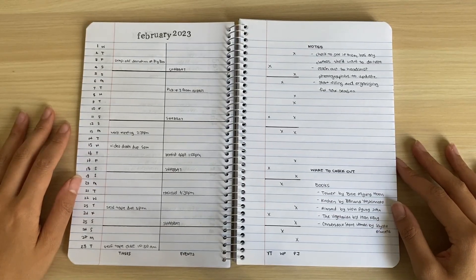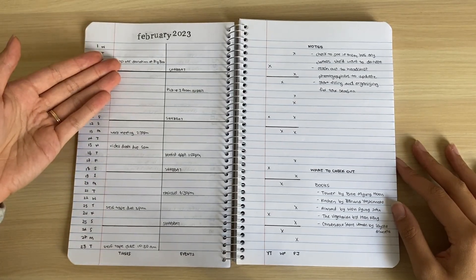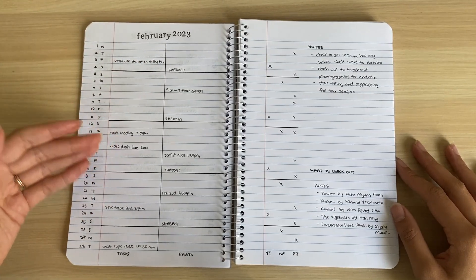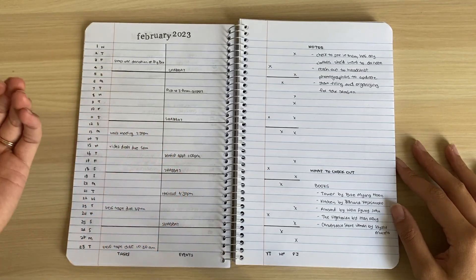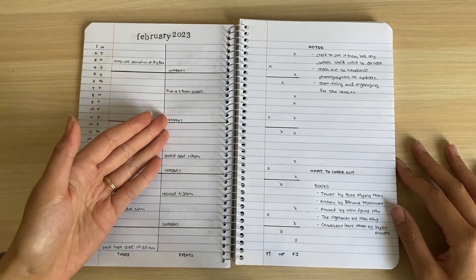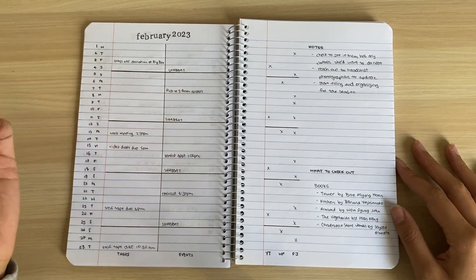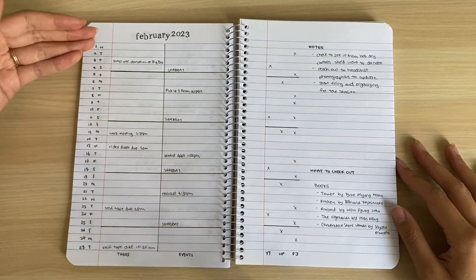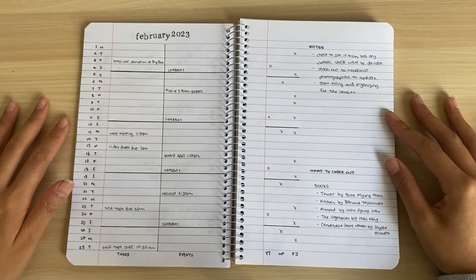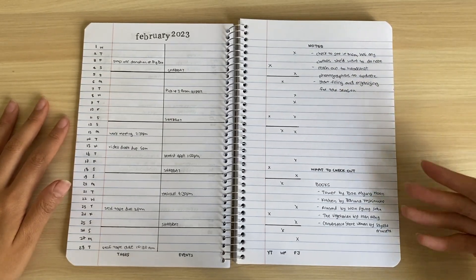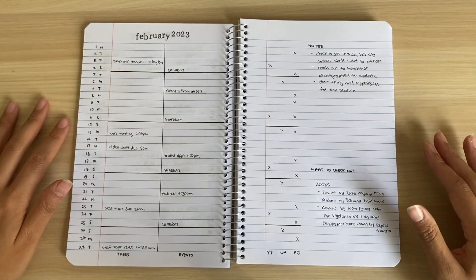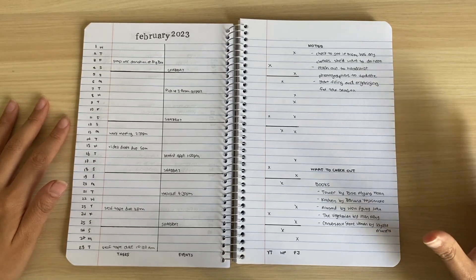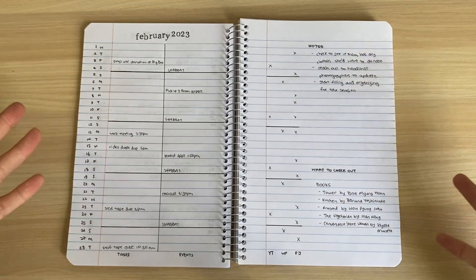Here is the monthly log. For tasks, we have things like dropping off clothing donations for an organization, self-tapes for acting, work meetings and deadlines. For events, it's things like meeting up with somebody, observing Sabbath—that's what my husband and I do—dentist appointments, haircut appointments. For the habit tracker, it lines up with the days of the week. For notes, that's just anything that I need to take note of for this month ahead. And 'want to check out'—I just wrote a few books that I would really love to read when I have the time. I've just been so focused on reading scripture that I haven't made any time to read fiction and other books in general. This is the monthly log.